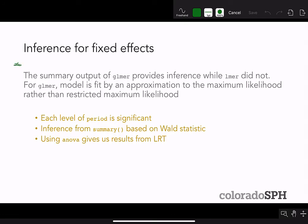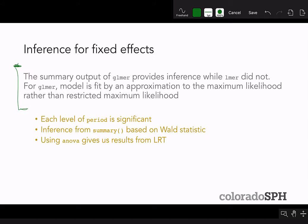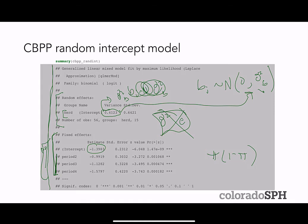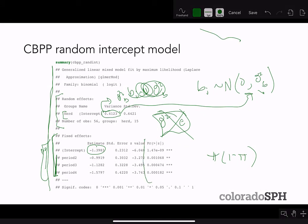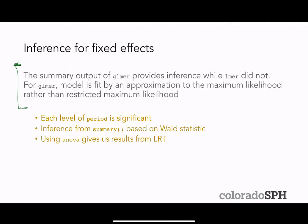For inference on fixed effects, the summary output of GLMER provides inference while LMER did not. For GLMER, the model is fit by approximation to maximum likelihood rather than restricted maximum likelihood, so you can use likelihood ratio-based tests. The output automatically returns Wald p-values based on the Wald z-test at each level of each covariate. You can also use ANOVA to get a likelihood ratio-based statistic.